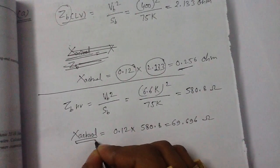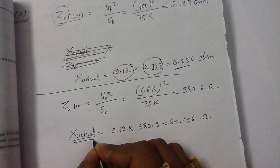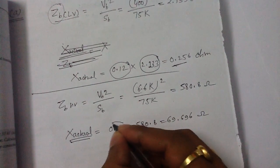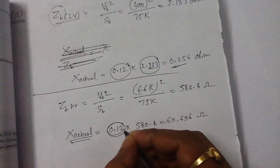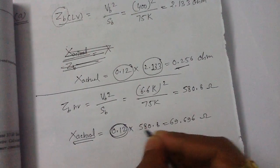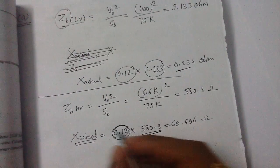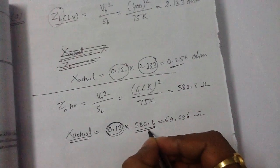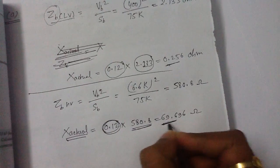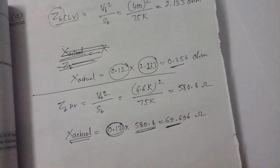Calculating 6.6 kilo squared divided by 75 kVA gives a base impedance of 580.8 ohms. To find the transformer reactance referred to the HV side, we multiply the per-unit reactance by the base impedance on the HV side, giving 69.696 ohms.